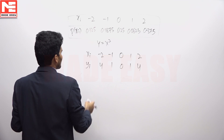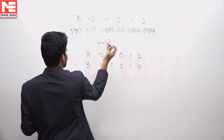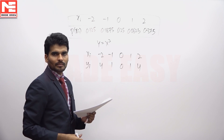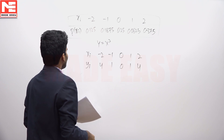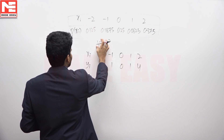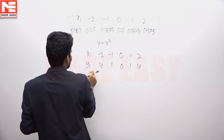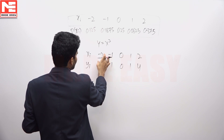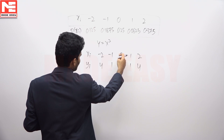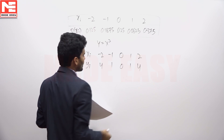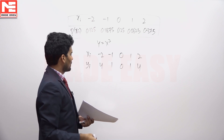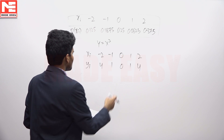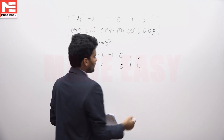Another random variable y is created such that y equals x squared, and we have to find the entropy of y. The possible values taken by y will be 0, 1, and 4.